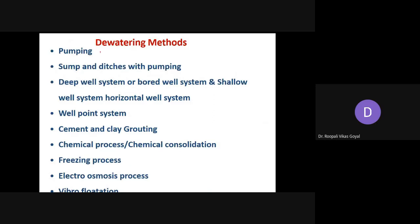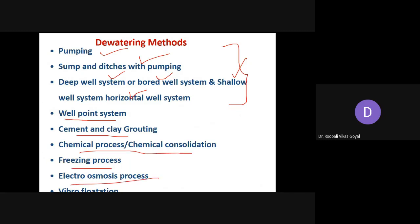There are different methods used for dewatering. First is pumping; sump and ditches with pumping; deep well system or bore well system; shallow well system; horizontal well system — all systems in which pumping is normally done. Next are the well point system, cement and clay grouting, chemical consolidation, freezing process, electroosmosis process, and vibro-flotation. In this first part we will study pumping, sump and ditches with pumping, and deep well or bore well system.